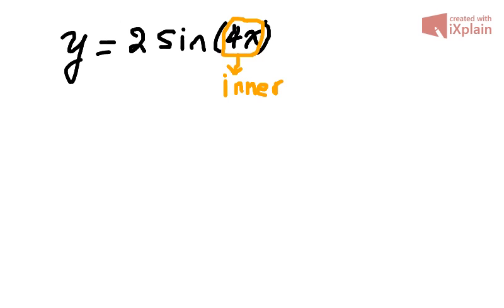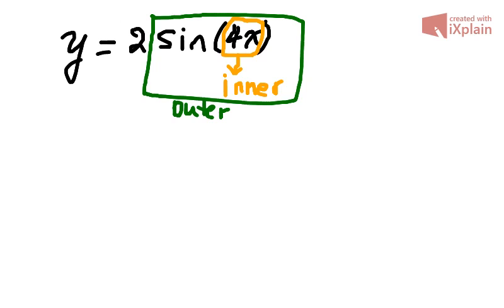the outer function is the sine function, the green one. And the 2 is just outside multiplying the expression, so it's just a constant that we'll keep.